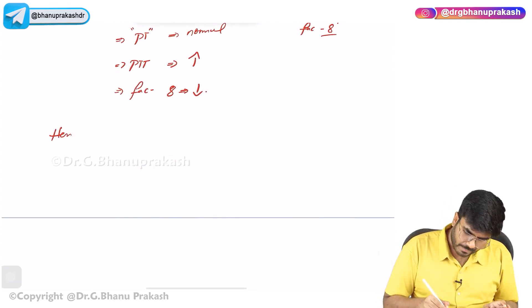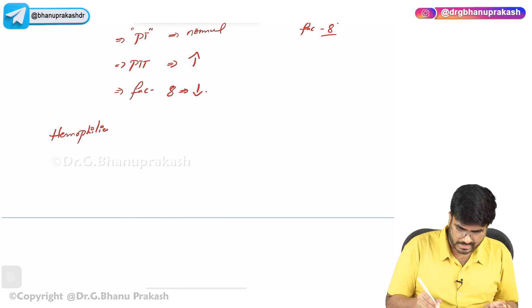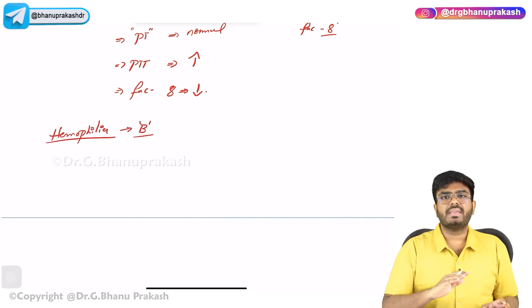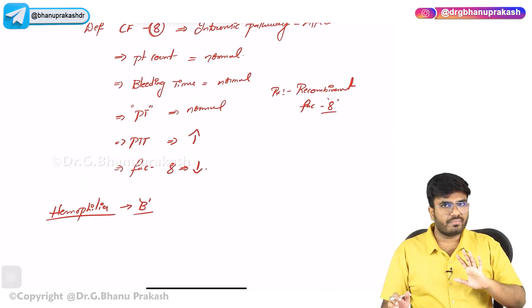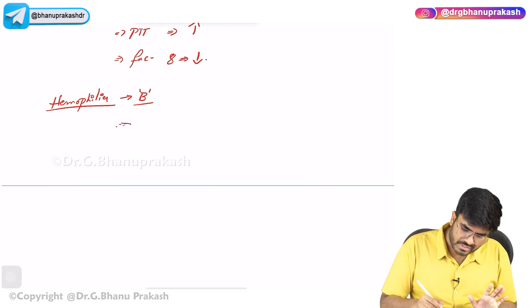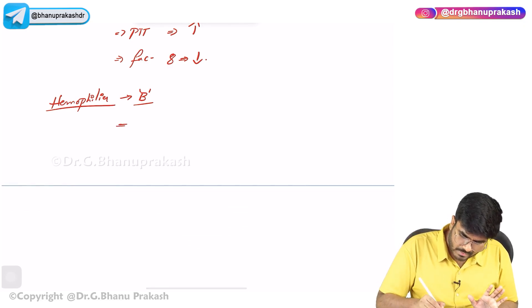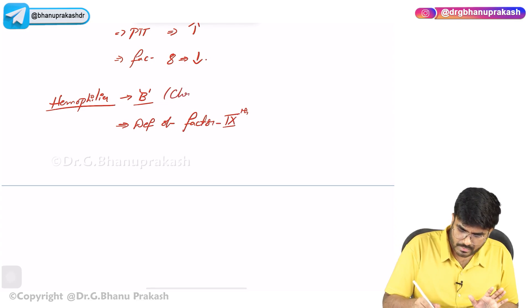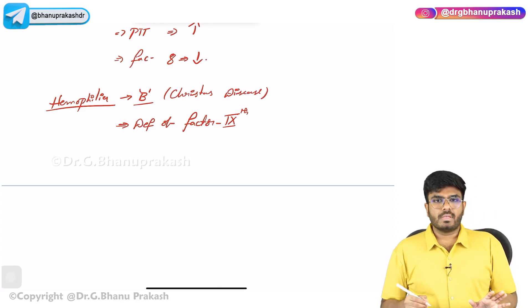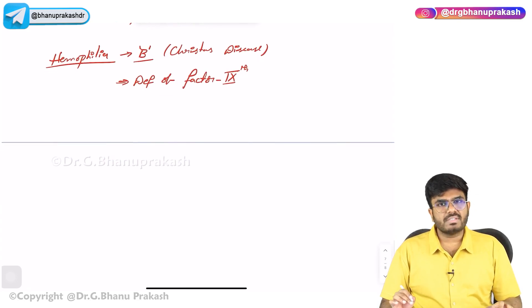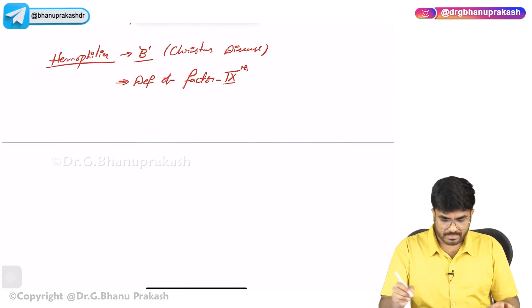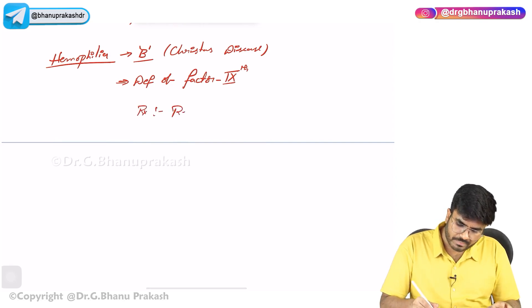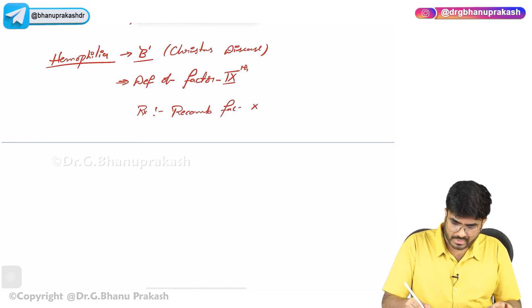The second disorder is Hemophilia B. All the labs are going to be exactly the same — platelet count, bleeding time, PT normal, PTT elevated. The only difference is the deficiency: it is a deficiency of factor number 9. Hemophilia B is also called Christmas disease. The treatment is recombinant factor 9.